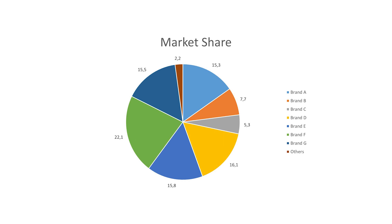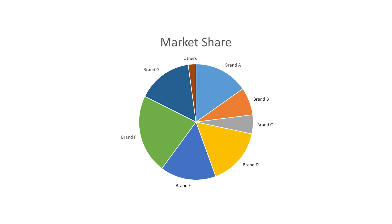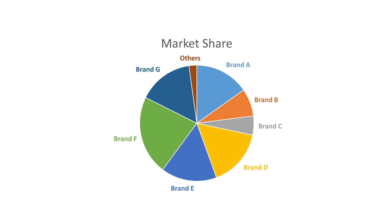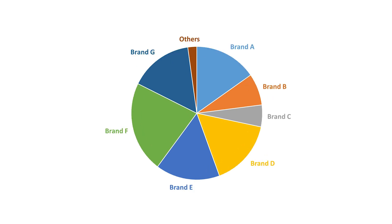Putting the legend text next to the series makes visual processing faster and easier. Now adjust the font size and color — even better. And delete the headline, because this is what you say. But we still have a problem: some pieces are very similar in size and can hardly be distinguished. It's only possible when you add the values.